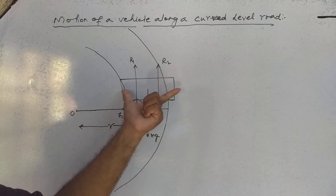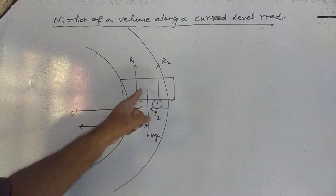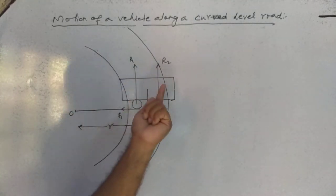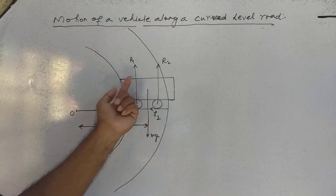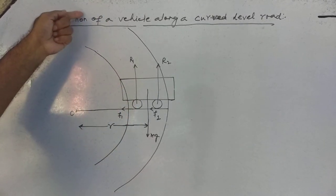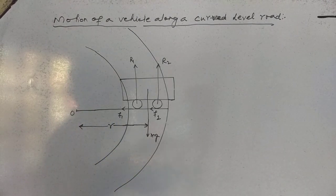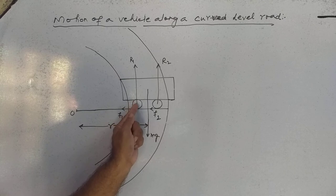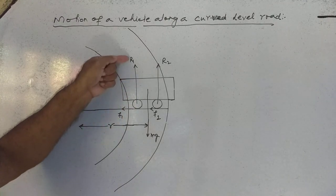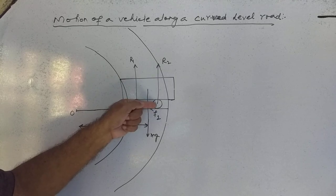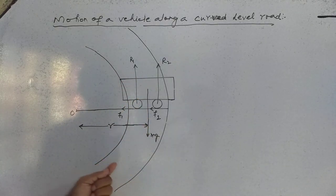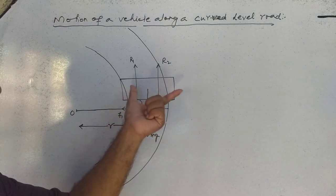Please consider this vehicle as either its front side or its rear side — not the side view. Visualize it this way: on one side there is a pair of wheels giving normal reaction R1, and on the other side a pair of wheels giving normal reaction R2. This is balanced by the weight mg of the vehicle — it is a contact force.